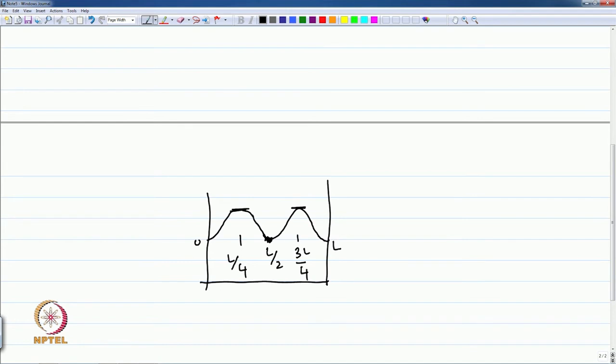The probability of locating the particle in a certain region is dependent on what that region is and also what the energy associated with that particular wave function is for that particle.